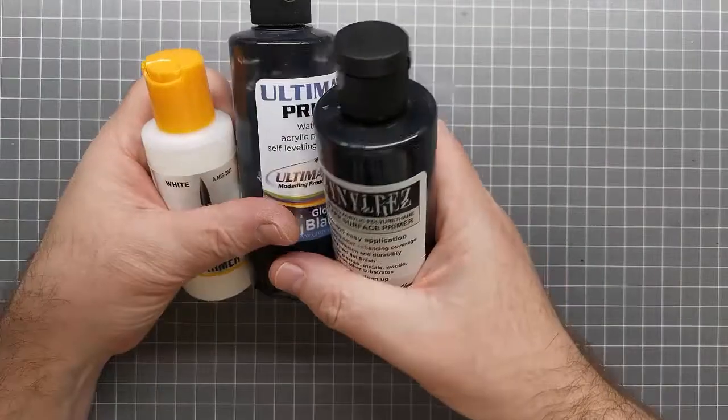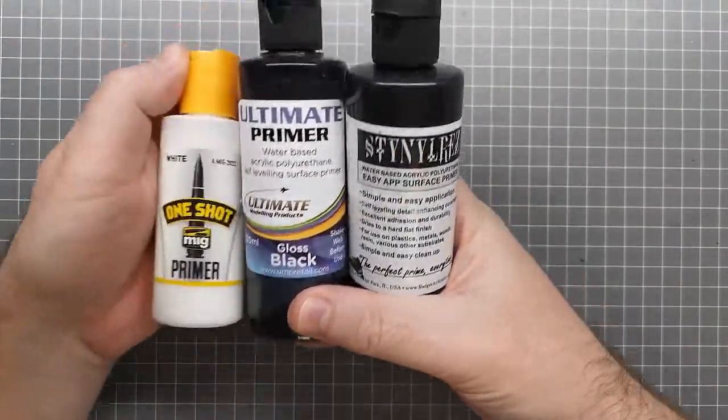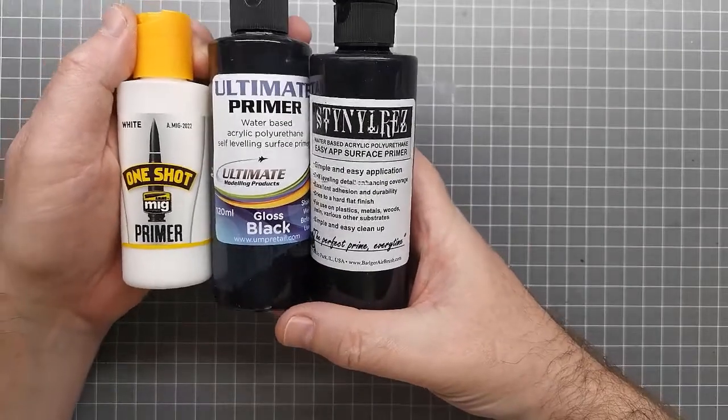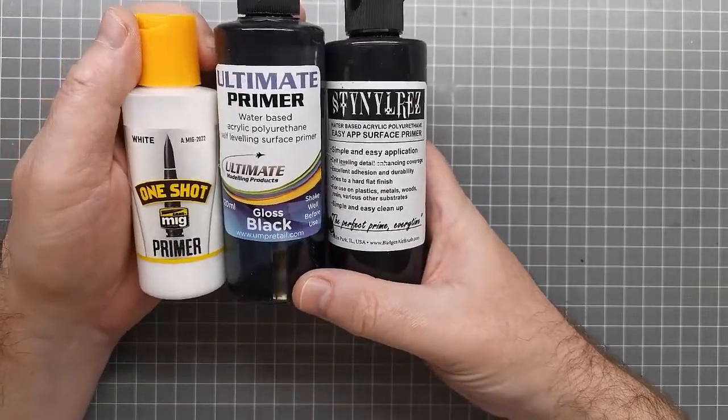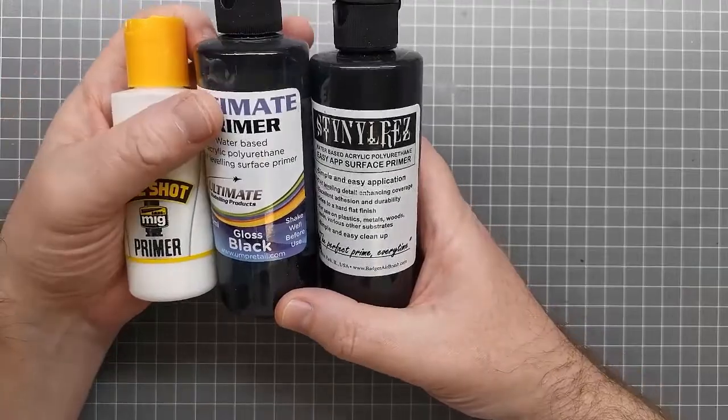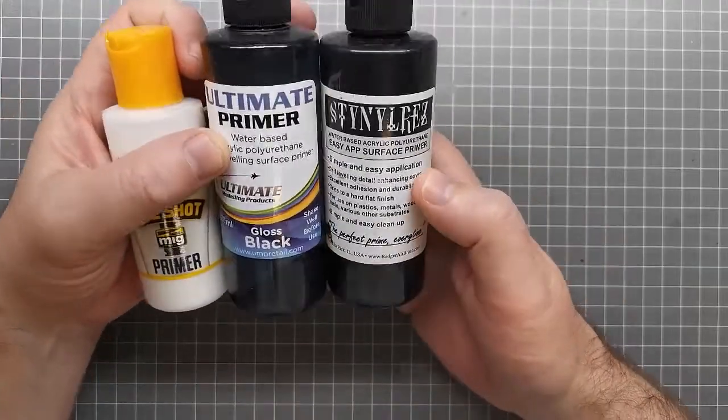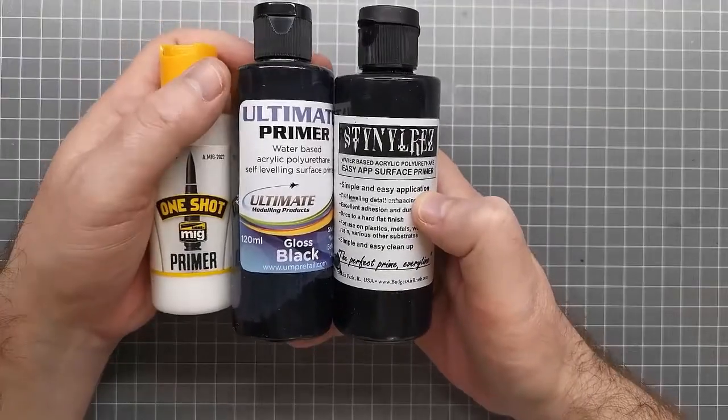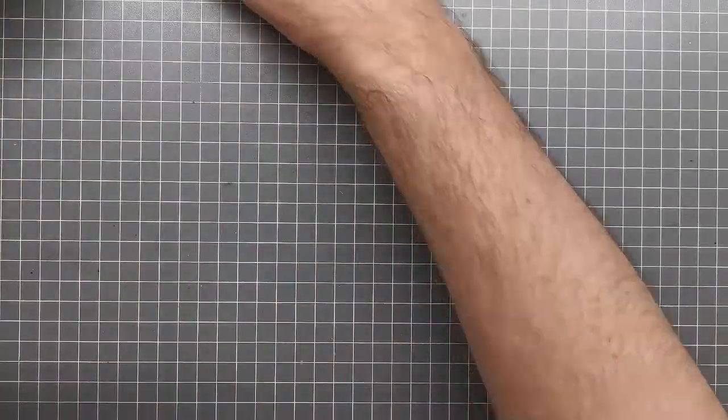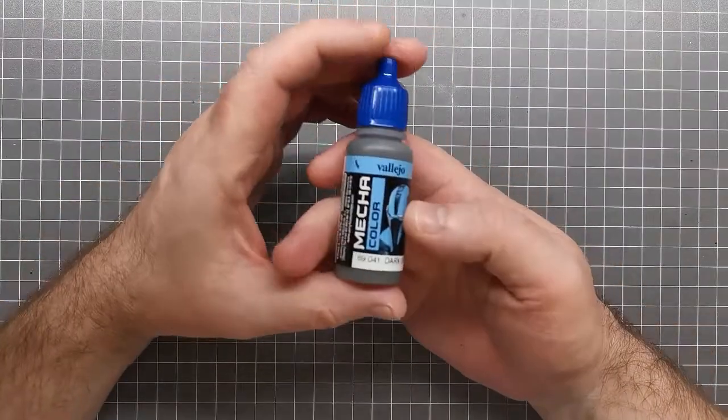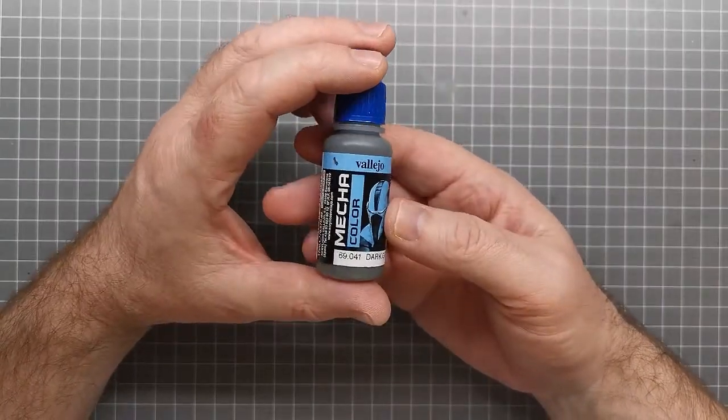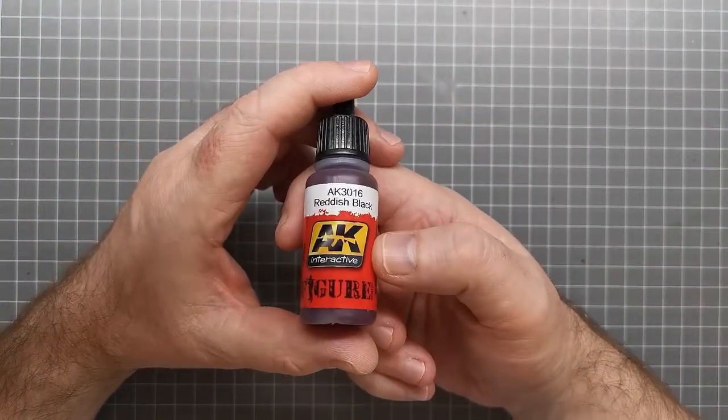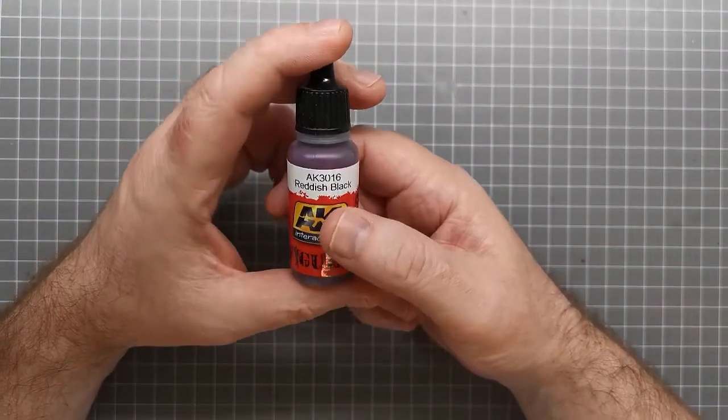I want to talk about the paints I'm going to test it on. The first is polyurethane primer, whether it's MIG One Shot, Ultimate Primer, or Stynylrez. I believe it all comes out of the Badger factory. I'll also be testing with Vallejo Mecha Color and an AK color as well.